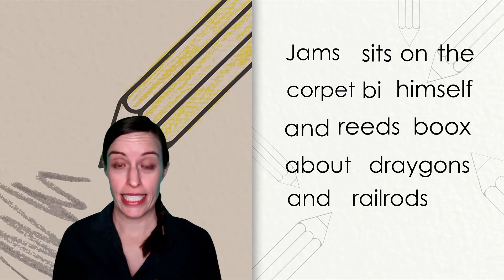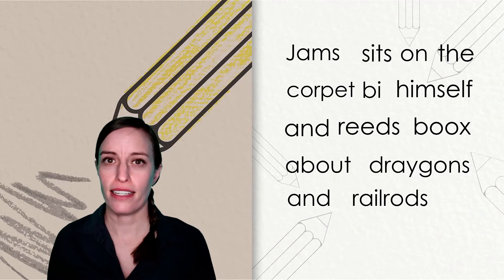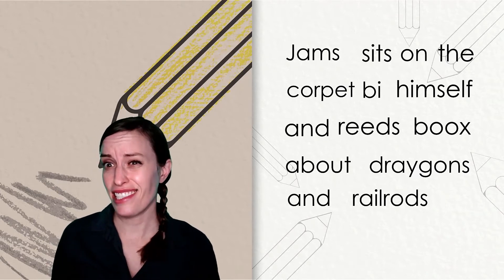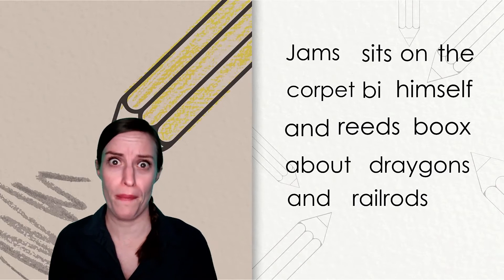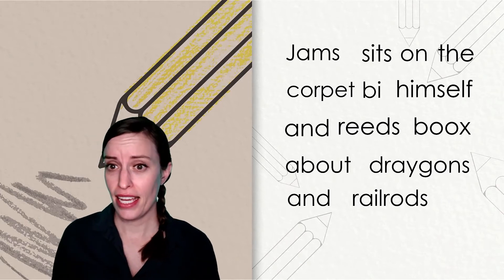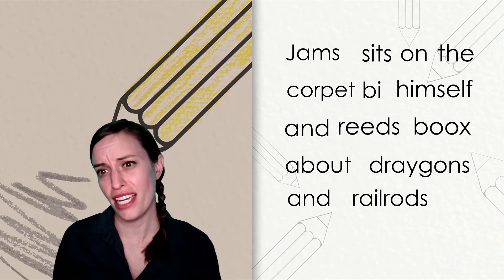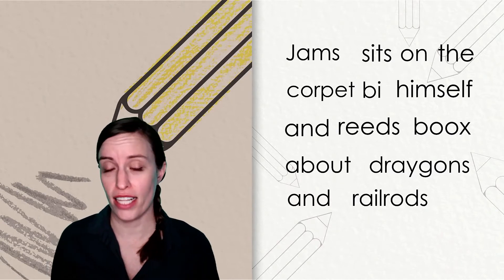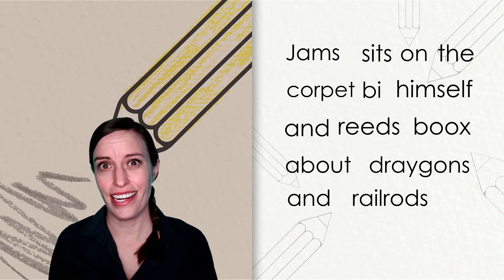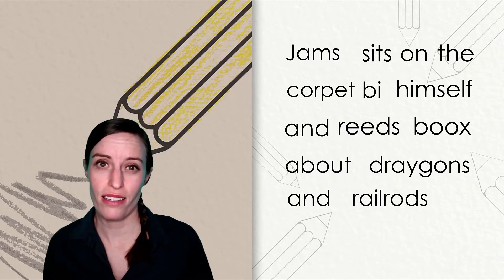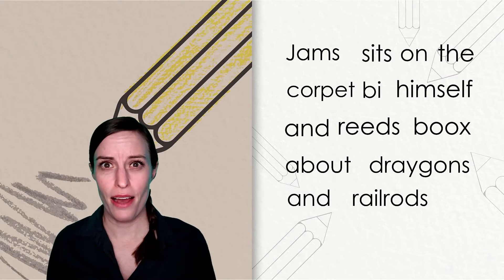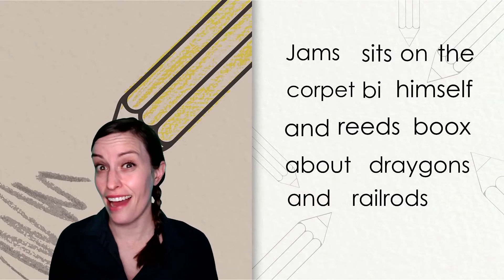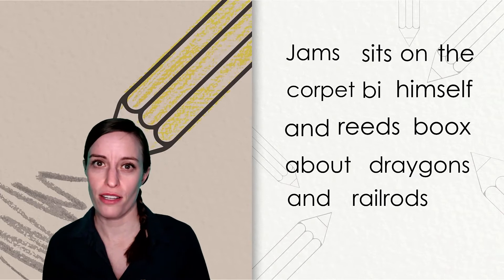Oh my goodness, I might need your help to read it. Let me try. Jams sits on the corpette bih himself and reads boox about draygons and railrods. I see an error in the very first word. We have been reading books about a character named James. I think that is the name the author is trying to use.